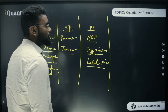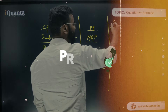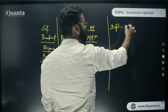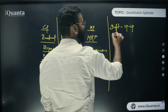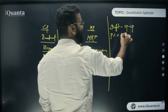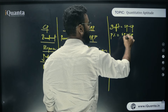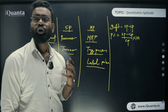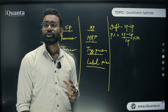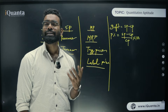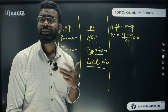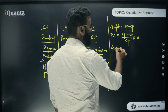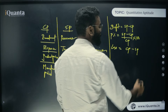Profit occurs when cost price is less than selling price. Profit = Selling Price − Cost Price. Profit percentage = (SP − CP) / CP × 100. Remember, profit percentage is generally calculated on cost price. If nothing is mentioned, we always calculate it on cost price; only if specifically mentioned do we calculate on selling price.